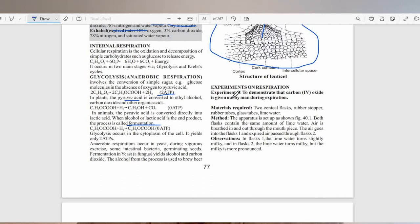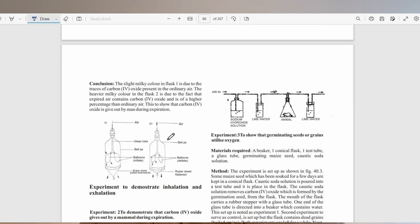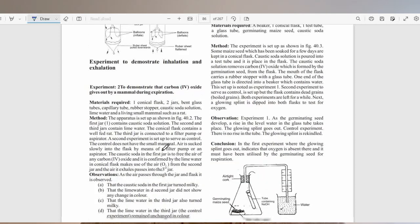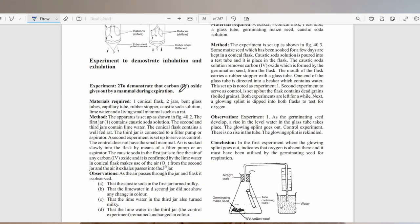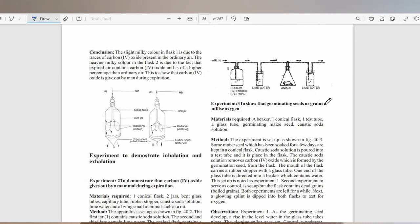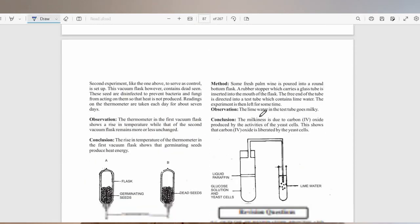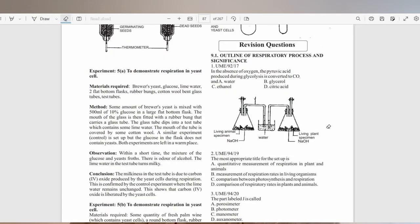There are different experiments to validate different observations in respiration. There is an experiment to validate that carbon dioxide is given out during expiration. You also have an experiment that shows that carbon dioxide is given out by mammals. You have another experiment that shows that germinating seeds utilize oxygen. Now, let us consider a few questions before we conclude this video.